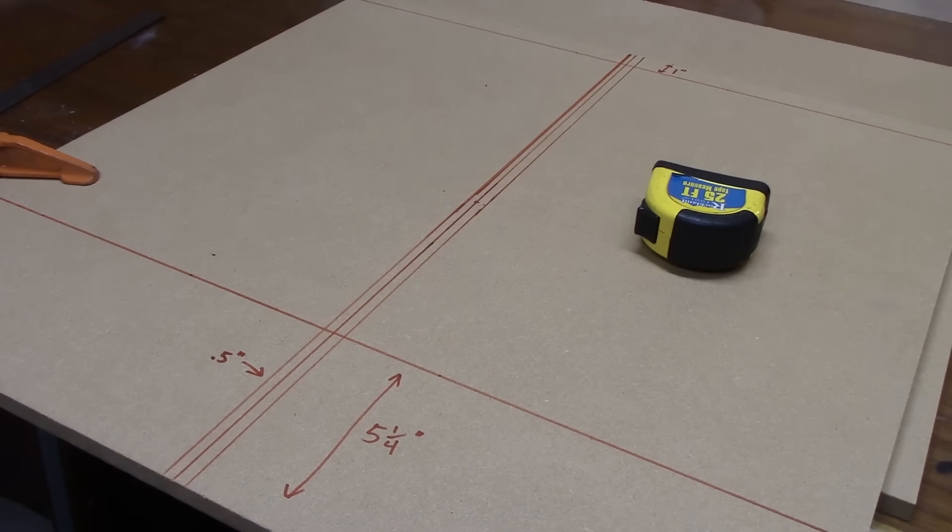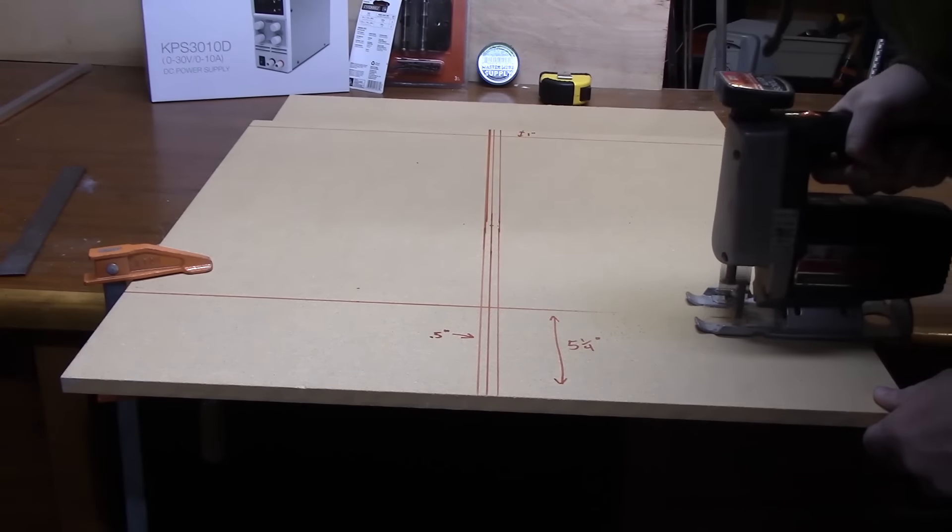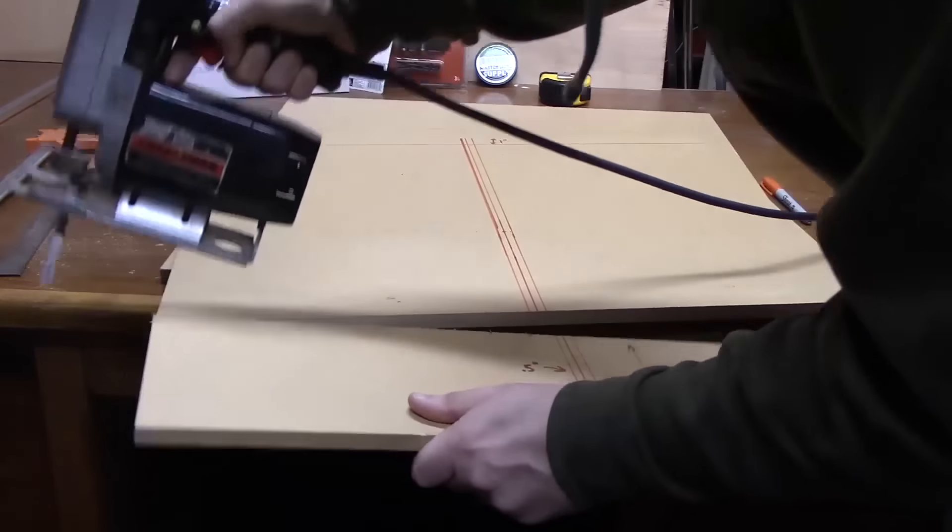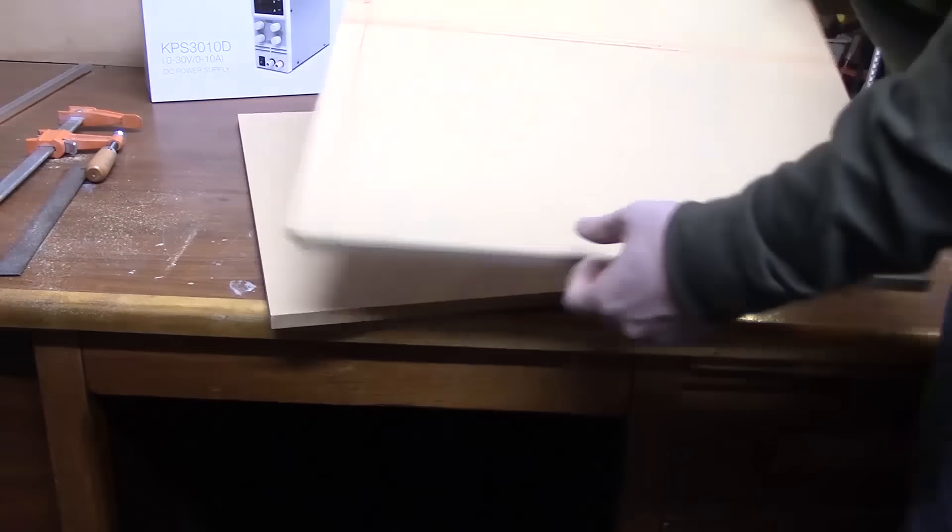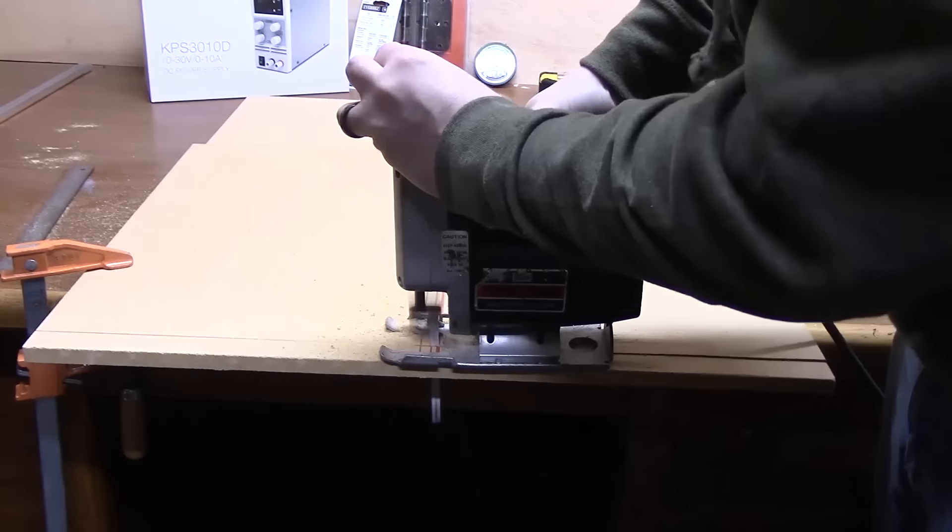I just marked out some lines on my first piece of MDF. The three lines in the middle will be for cutting out the slot that the aluminum U-channel is going to live in. And then the two lines on each side are going to make the actual bendy part a little bit smaller so we have some room to work with the screws that the nichrome wire is going to be attached to.